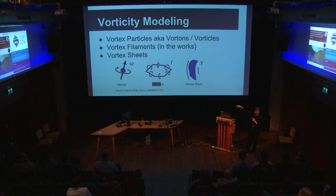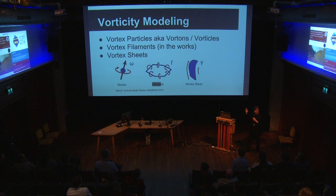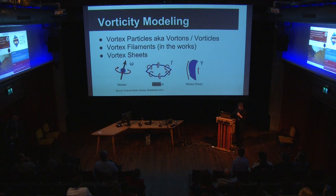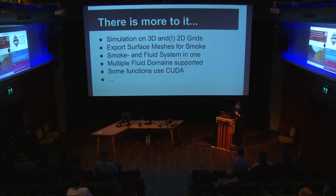In the middle you see vortex filaments, which can be used to create things like smoke rings. They are not in there yet — still in development — but I talked with the developers and they are actually trying to add those, so there's more in store.